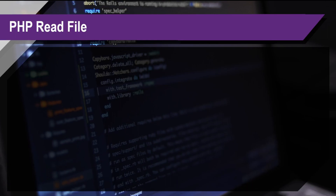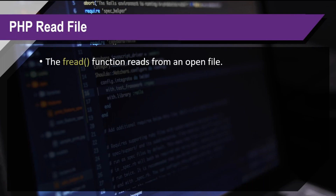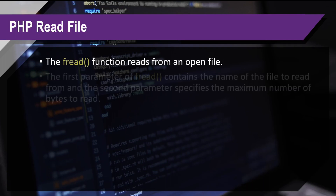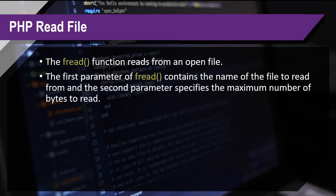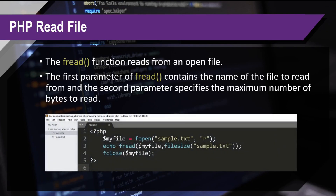Now let's talk about reading a file. This is the fread function we used earlier, which reads from an open file. The first parameter of fread contains the name of the file to read from, and the second parameter specifies the maximum number of bytes to read. That's how we manage reading the file.